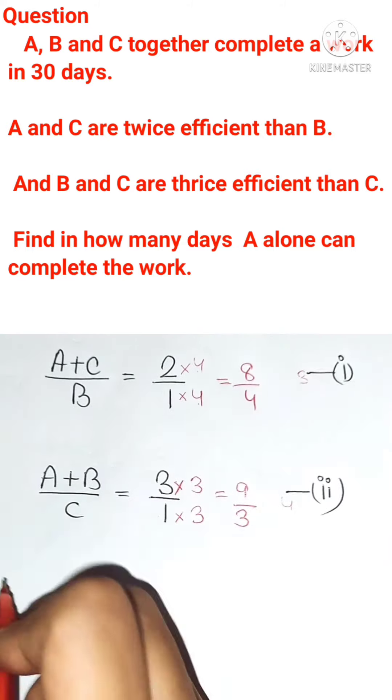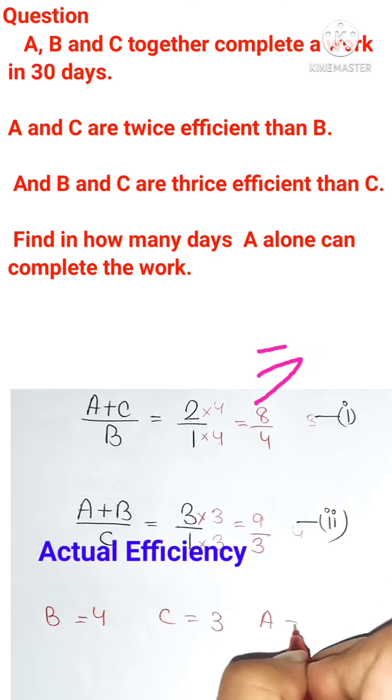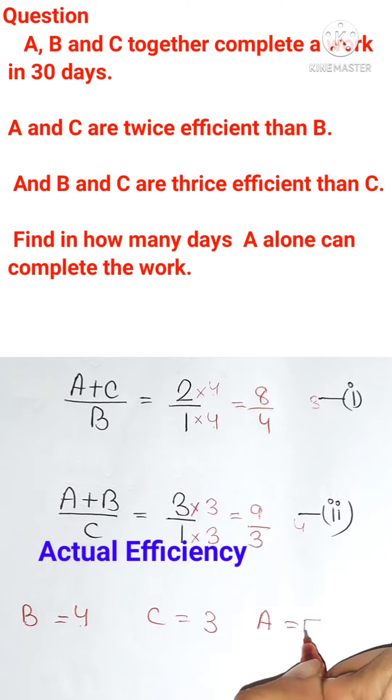So here as you can see efficiency of B is 4 here. Efficiency of C is 3 here. And the efficiency of A will be total efficiency that is 12 minus the efficiency of B and C. That is 4 plus 3 is 7. 12 minus 7 is 5.